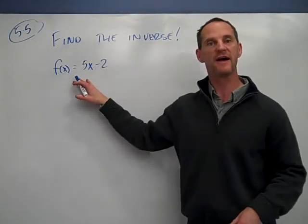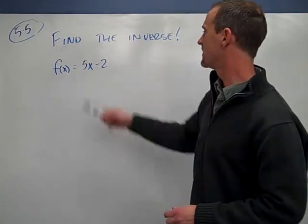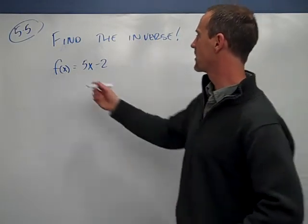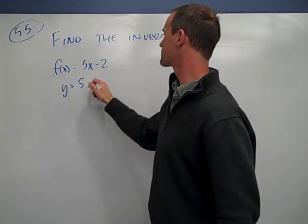From 5-5, I've got a very straightforward find the inverse of this linear function. So, we first write it as y equals 5x minus 2.